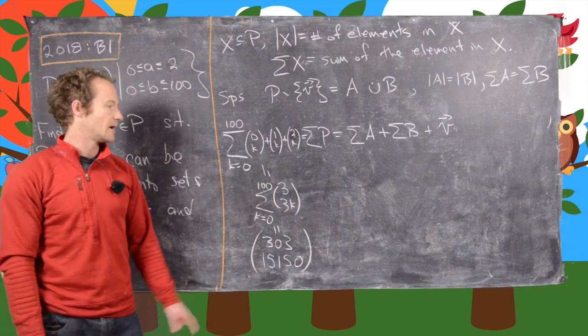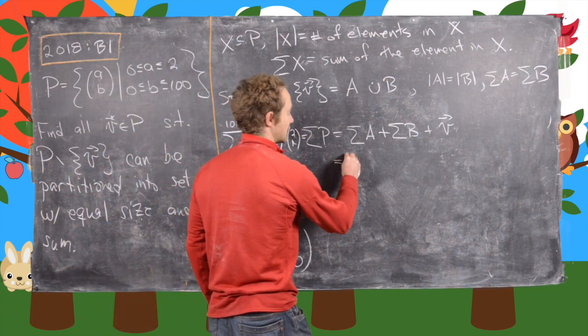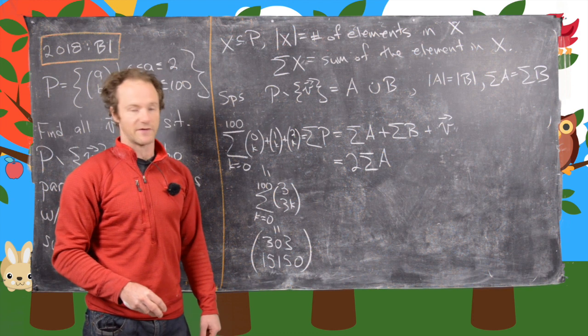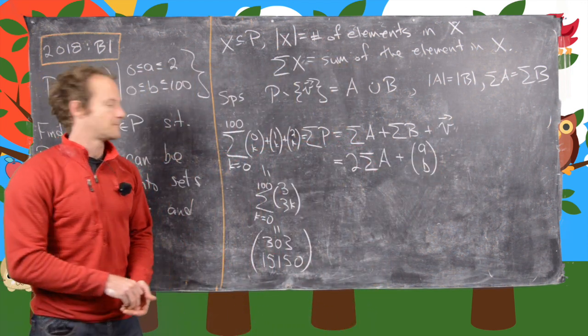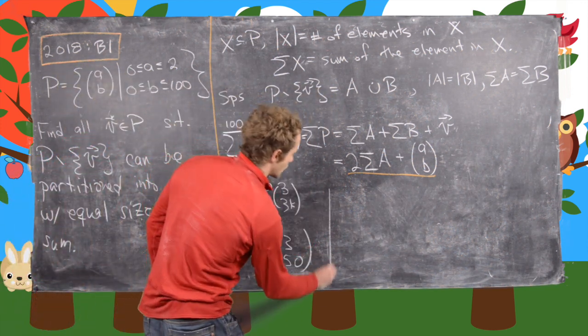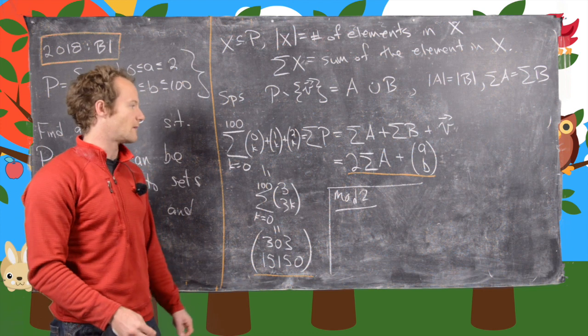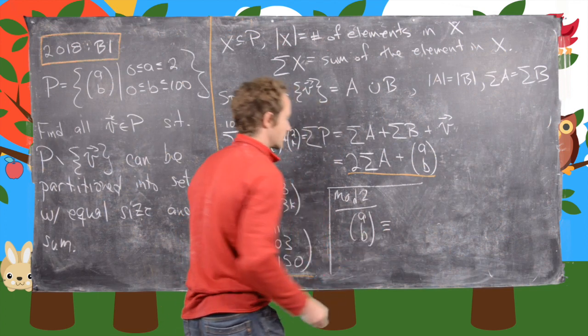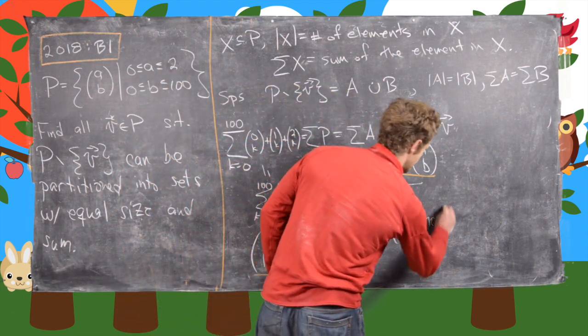We've calculated the sum of P, and now we want to calculate it this other way. This equals 2 times the sum of elements in A, because the sum of elements in A equals the sum of elements in B, plus (A,B), where I've renamed V as (A,B). Looking at the extreme left and right-hand side and reducing mod 2, this part equals 0. So we get (A,B) is congruent to (1,0) mod 2.